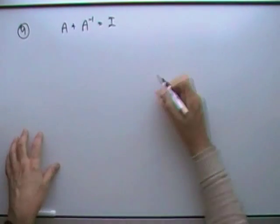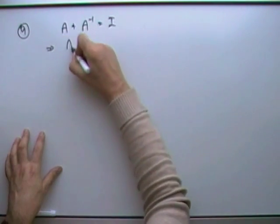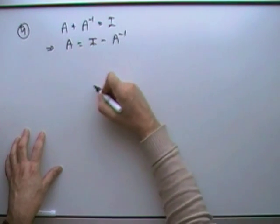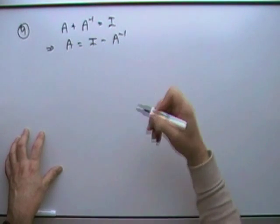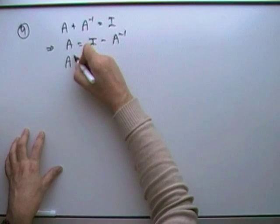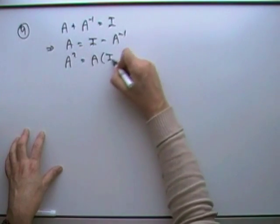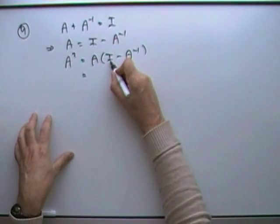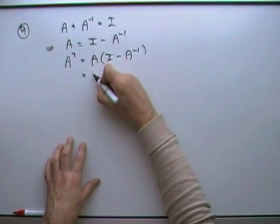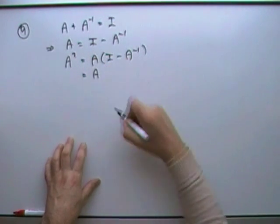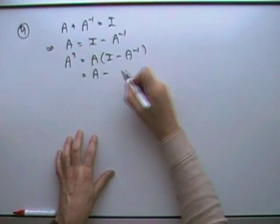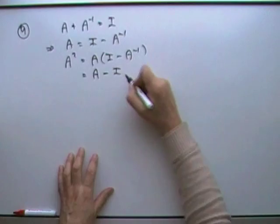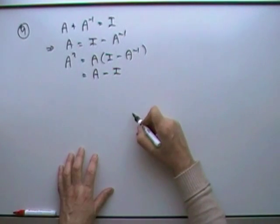Well, the first thing I would do is take that and get A. A is going to be I minus the inverse of A. If I want to work my way up to A cubed, I would start with A squared, which would be A times that. So that's A times I — the identity matrix is equivalent to multiplying by one with numbers, so it just leaves it alone. And the inverse multiplies the actual thing to bring it down to the identity matrix.